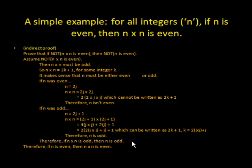Since n cannot be even, and it can be odd, it must only be able to be odd. Therefore, if n times n is odd, then n is odd. And therefore, by using indirect proof, we have proven if n is even, then n times n is even.